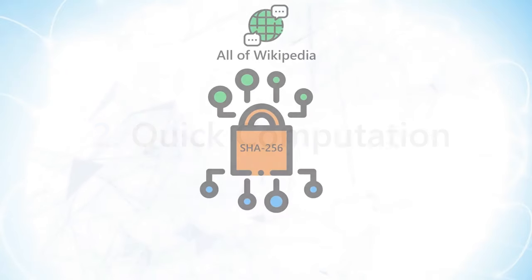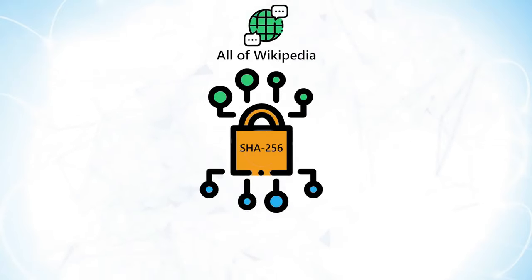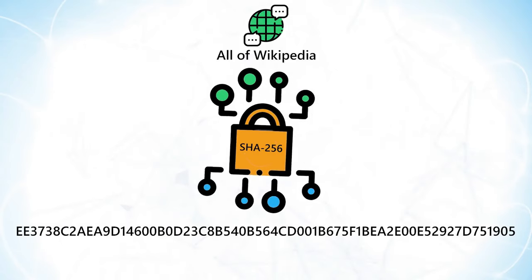Property 2: Quick computation. The hash function should be able to return the hash of an input quickly. If the process isn't fast enough, then the system won't be efficient.